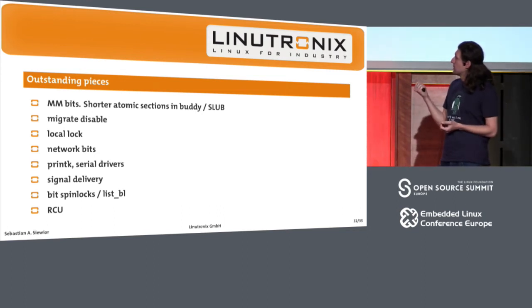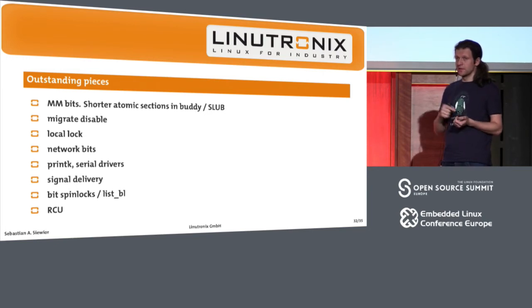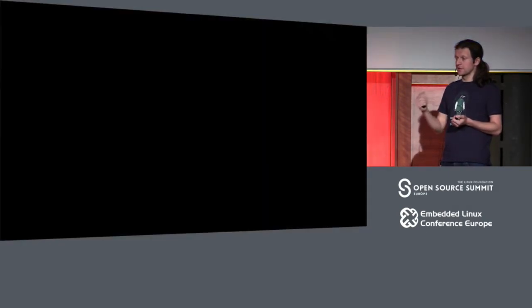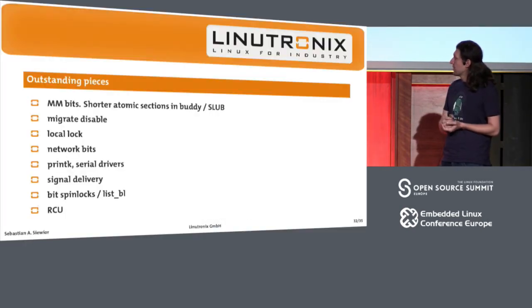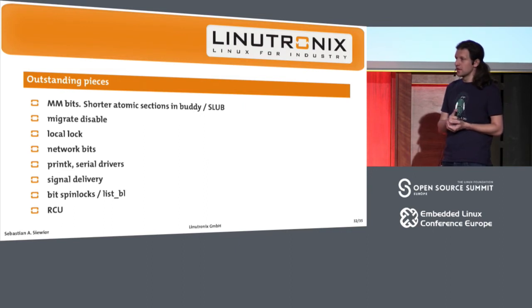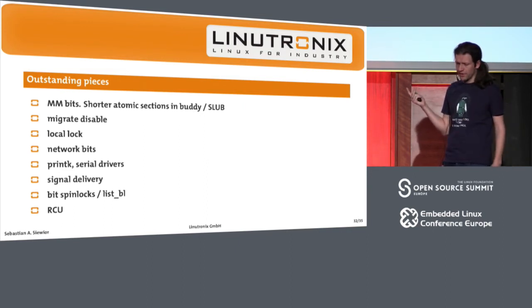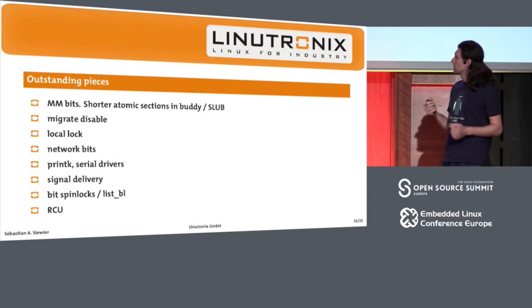Another thing we have is bit spinlocks, which are not a usual spinlock — it's just a spinlock that uses only a single bit to set and unset. While this works for vanilla and people are happy with it, we replace those with simple regular spinlocks. In general we have one spinlock, but there is some code in XFS I think that uses two of them, so we need probably a better abstraction and think about what to do about it.